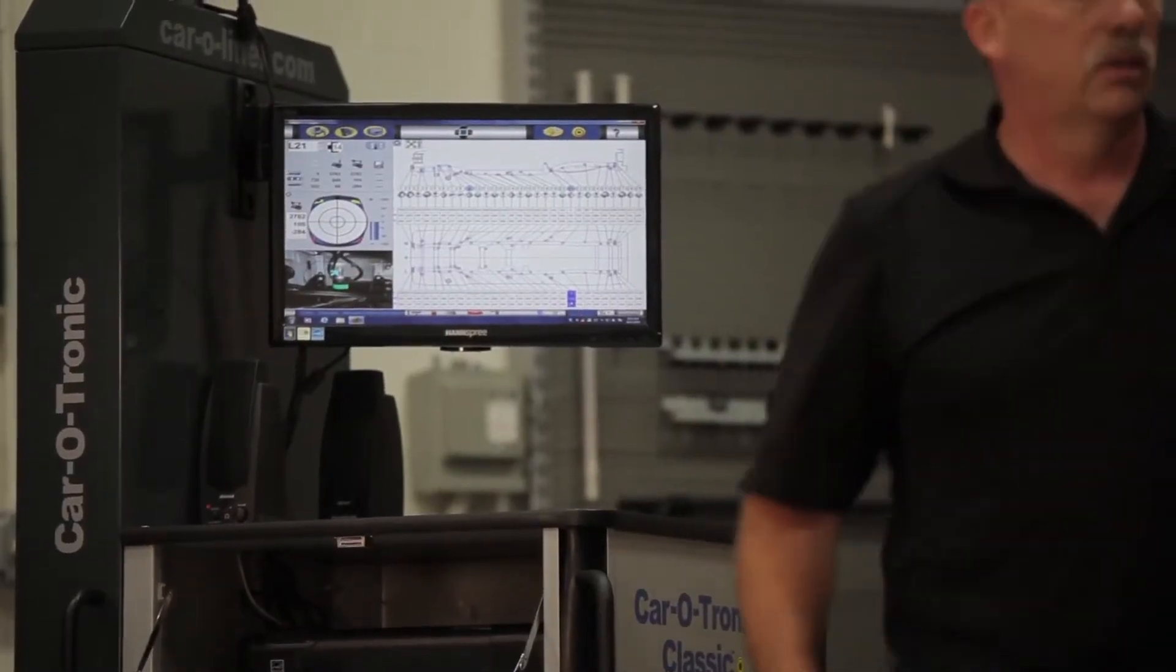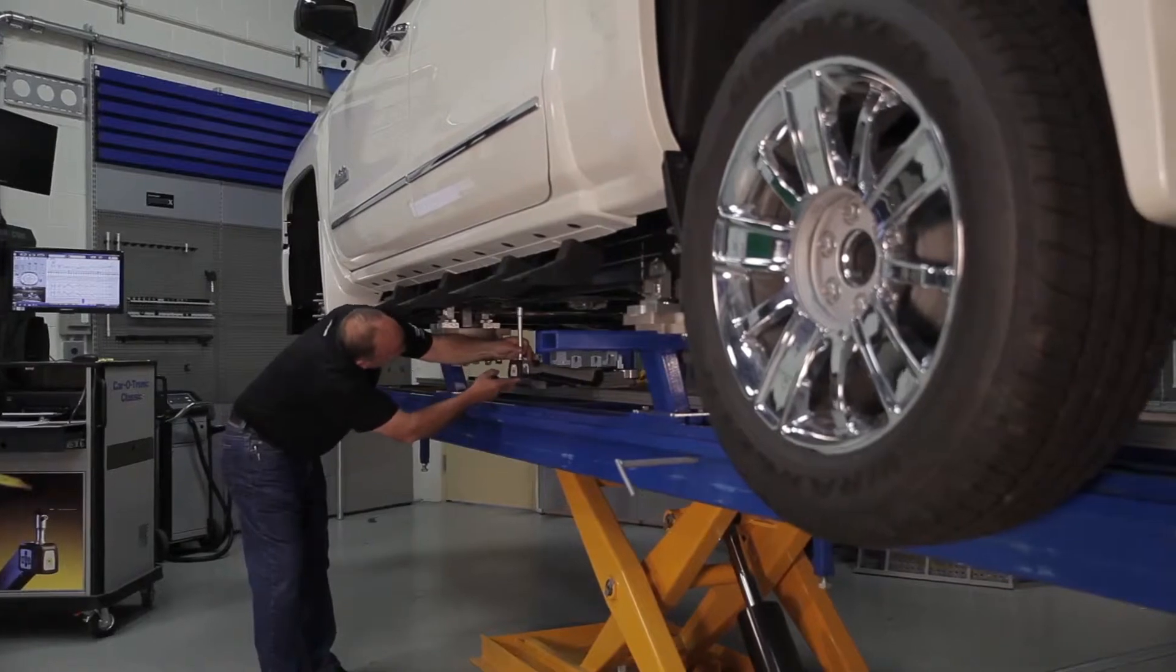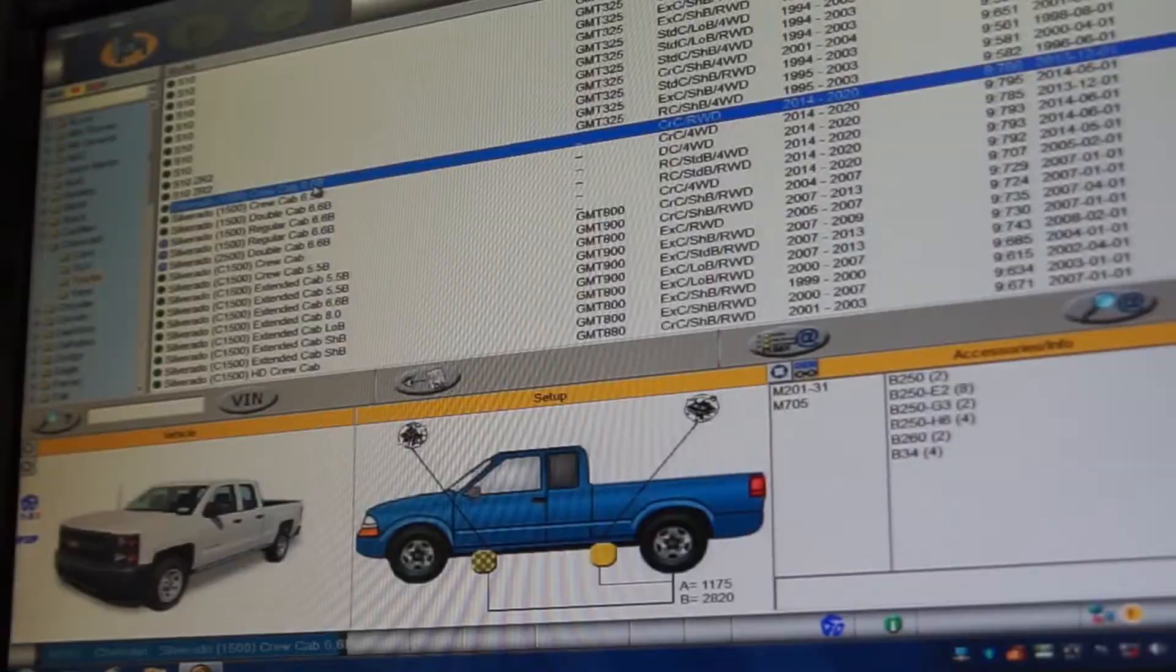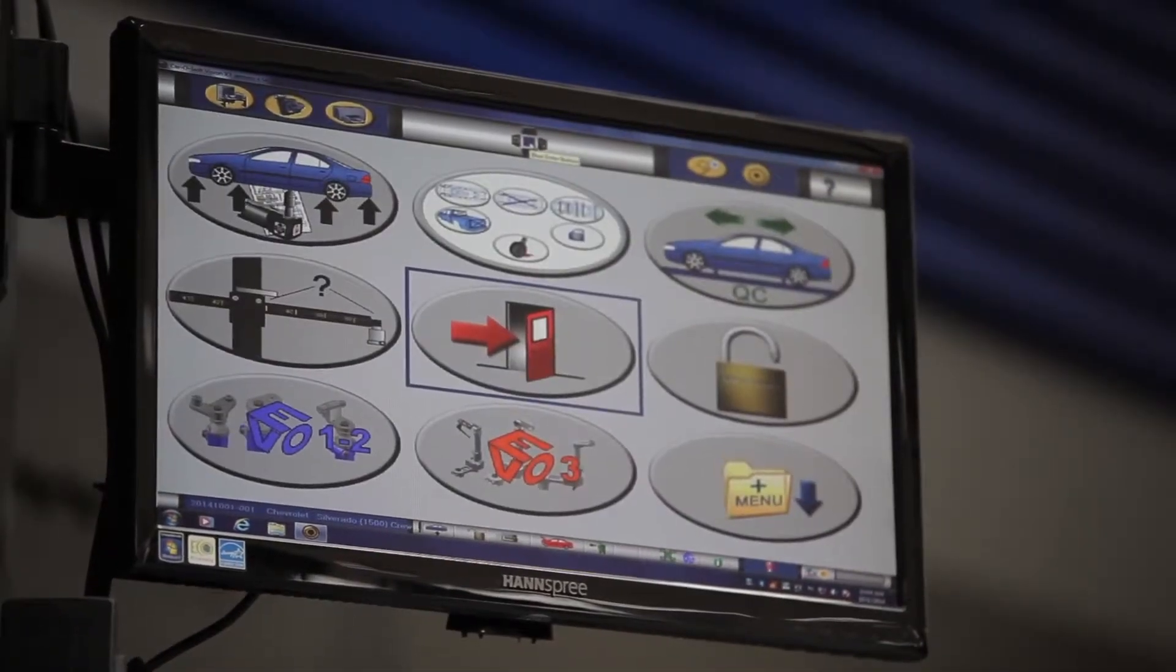To write a new work order for a suspension check, first ensure that you've centered the vehicle correctly. Begin by selecting the correct vehicle from the list. Then, click the blue menu square.